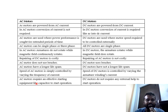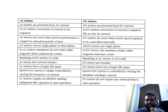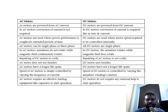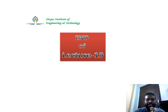AC motors require effective starting equipment such as capacitors, whereas DC motors do not require any external support to start. This concludes Lecture 19 of Basic Electrical Engineering, Unit 4 — DC Motors. Thank you.